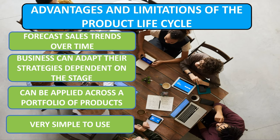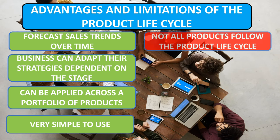With the more data a business has, the more accurate it becomes. Now moving on to the limitations: not all products will follow the typical shape of the life cycle. Whilst it is common that all products go through each stage, it cannot be assumed that they will. For example, some products may excel through the growth stage for years before hitting the maturity stage, whilst others may quickly move from the growth stage straight into decline, missing the maturity stage completely.